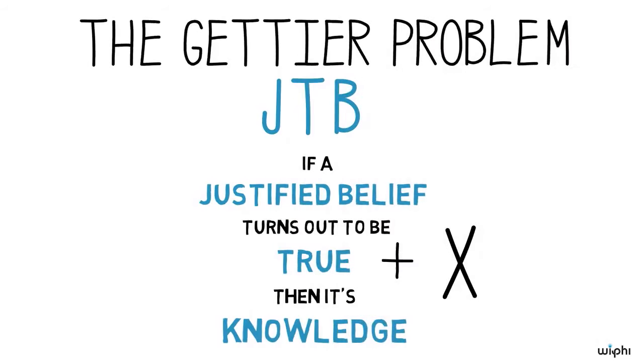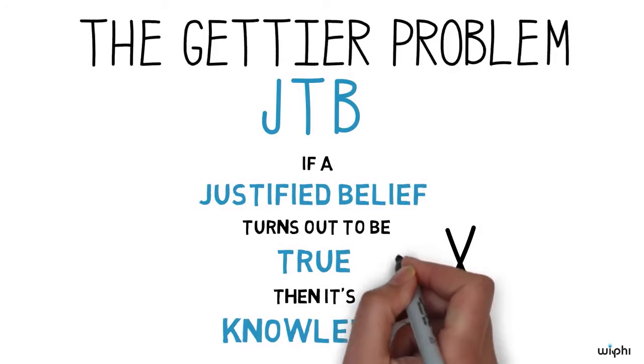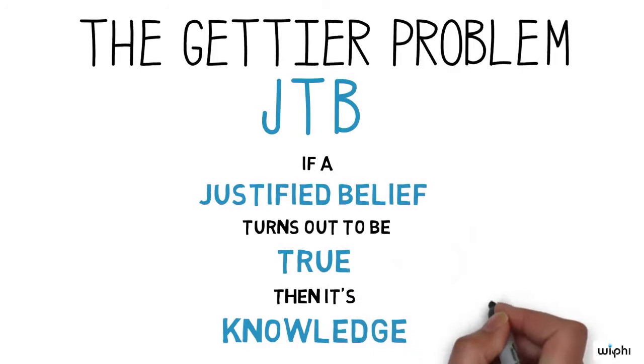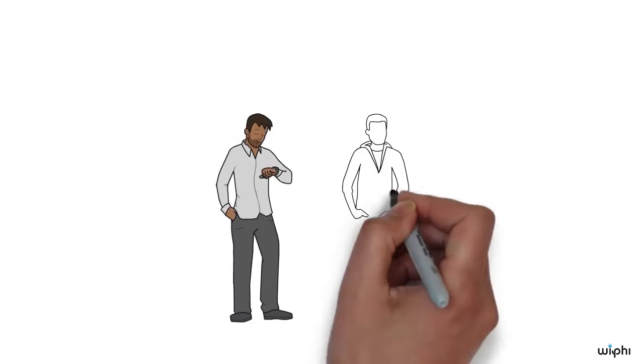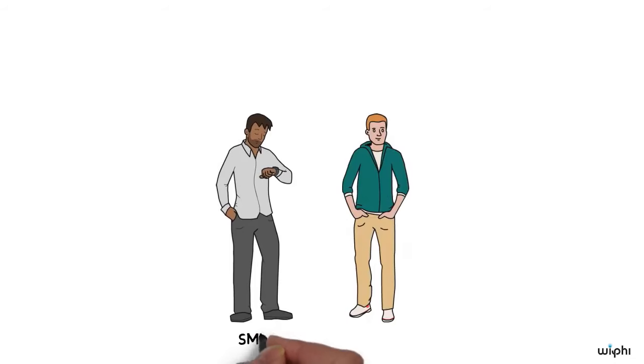Gettier himself didn't think the JTB analysis was correct, and he came up with some counterexamples to it, where someone has a true and justified belief but seems not to know. Here's his first counterexample. Smith and Jones are rival job applicants. Gettier doesn't say how, but they meet each other, perhaps in a waiting room after their job interviews, waiting to hear who got the job.